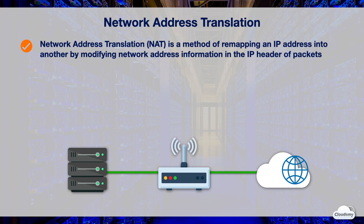Network address translation or NAT is a method of remapping an IP address space into another, by modifying network address information in the IP header of packets, while they are in transit across a traffic routing device. It was originally used to avoid the need to assign a new address to every host, when a network was moved, or even the ISP was replaced. NAT has become a popular tool in conserving global IPv4 address space.